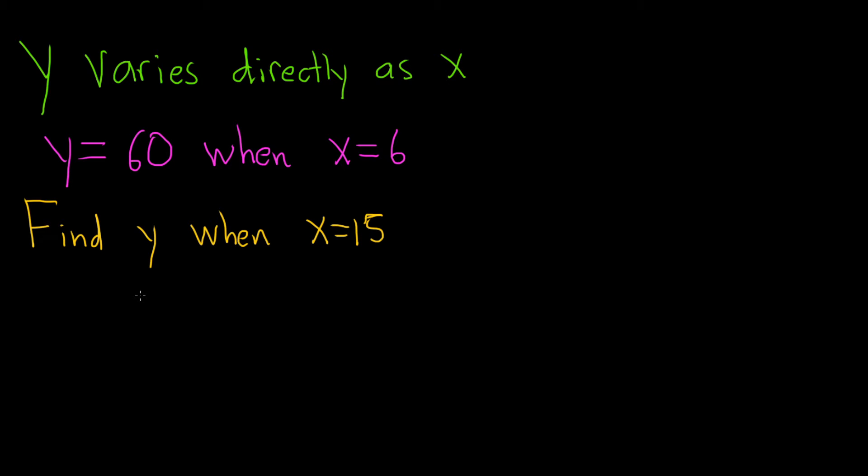In this problem, we're told that y varies directly as x, and that y equals 60 when x equals 6. Find y when x is equal to 15.